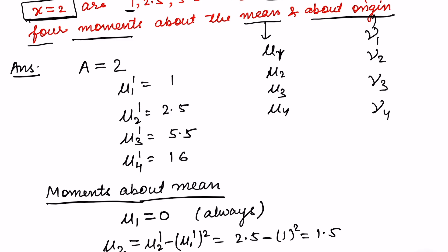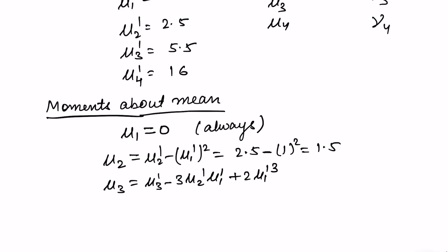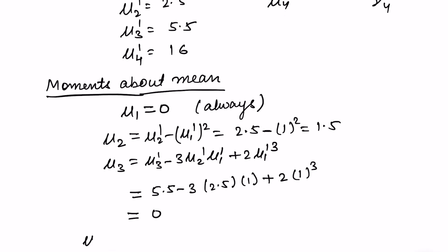Now let us find mu 3. The relation is mu 3 dash minus 3 times mu 2 dash times mu 1 dash plus 2 times mu 1 dash cubed. Substituting: mu 3 dash is 5.5, minus 3 times 2.5 times 1, plus 2 times 1 cubed. Solve this quickly, write the answer in the chat and check whether you got it correctly.